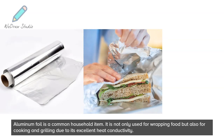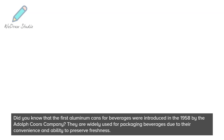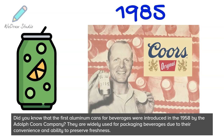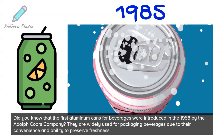Did you know that the first aluminum cans for beverages were introduced in 1958 by the Adolf Kurz company? They are widely used for packaging beverages due to their convenience and ability to preserve freshness. Aluminum is also highly recyclable without losing its original properties.